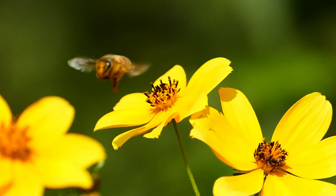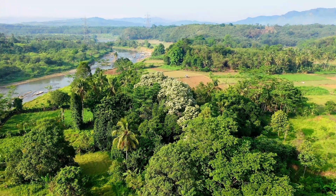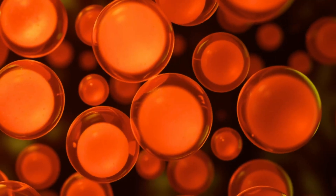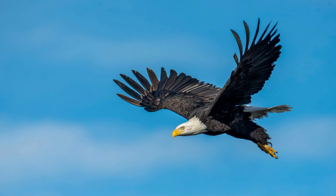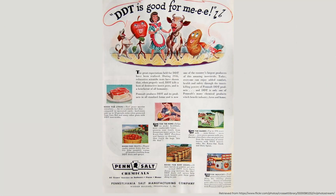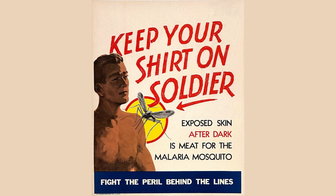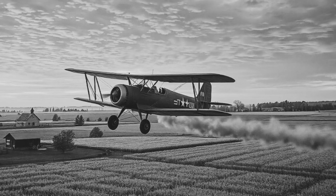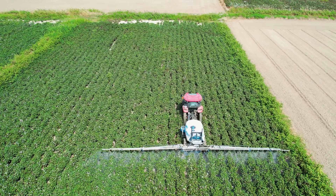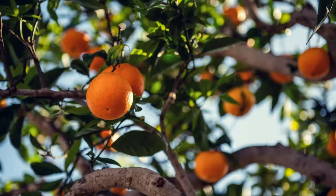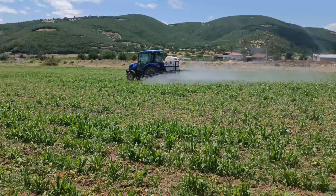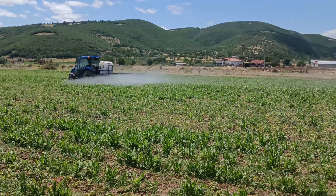However, while DDT works quickly to kill insects, its persistence in the environment and its ability to accumulate in fatty tissues meant that animals at the top of the food chain were also exposed to harmful concentrations. Initially, DDT was hailed as a miracle chemical — during World War II, it was used to combat the spread of typhus and malaria among soldiers. By the late 1940s and early 1950s, DDT became widely used in agriculture to protect crops like cotton, corn, and fruit from destructive insects, and was an essential tool in tropical regions where malaria was rampant.